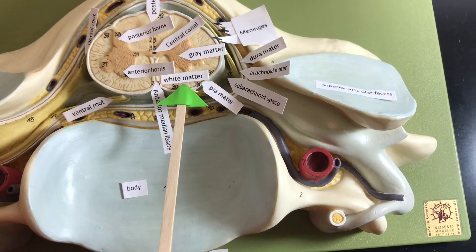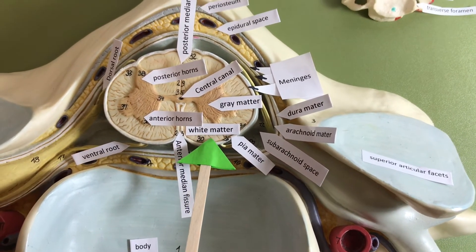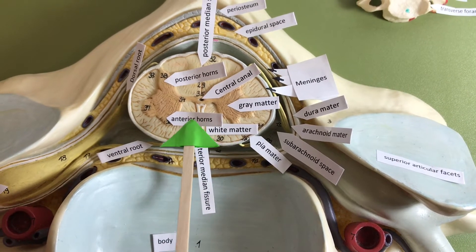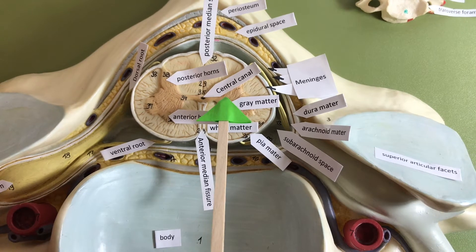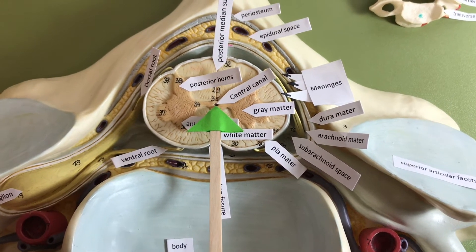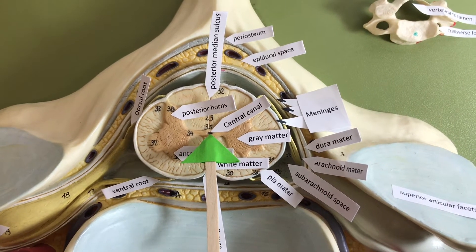The spinal cord has white matter that has myelinated axons. And then we have gray matter that's in the shape of a butterfly. And in the center we have a central canal. It also has cerebral spinal fluid.